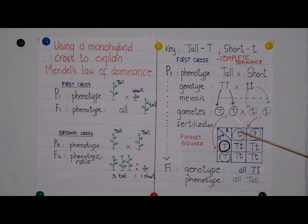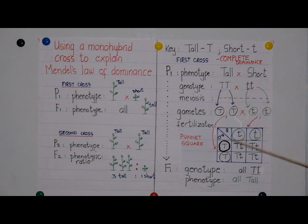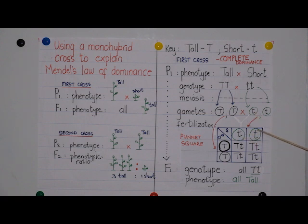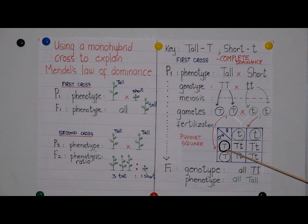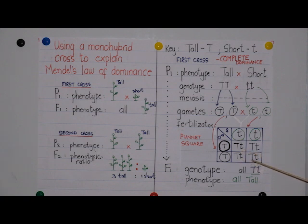For fertilization, we use a Punnett square to show the male gametes meeting and fusing with the female gametes. The male gametes of the tall parent — capital T and capital T — are written on the side, and the female gametes of the short parent — small t and small t — are written at the top of the Punnett square. I have drawn circles to indicate that they are gametes. To form each zygote, a gamete from one parent meets and fuses with the gamete from the other parent to form capital T, small t — which is heterozygous — and the same in each cell.